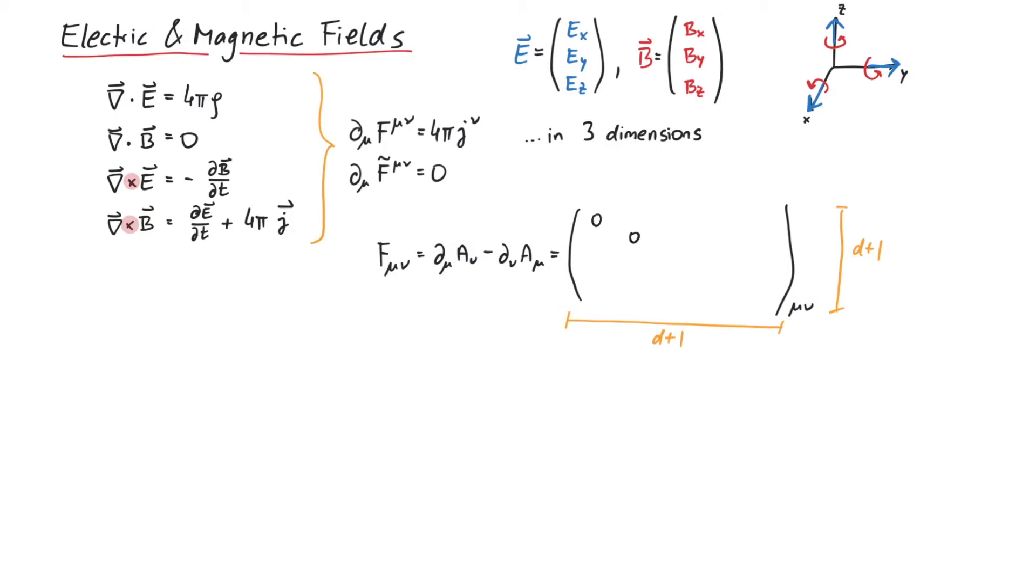Therefore, the diagonal entries are all zeros. Then, the entries here and here are the electric fields, and all those entries are the magnetic fields. From this, it's easy to see that there will be D electric fields, one for each spatial dimension.